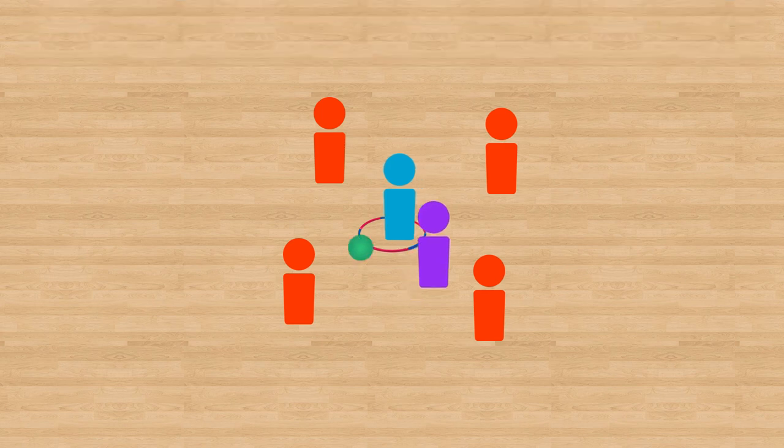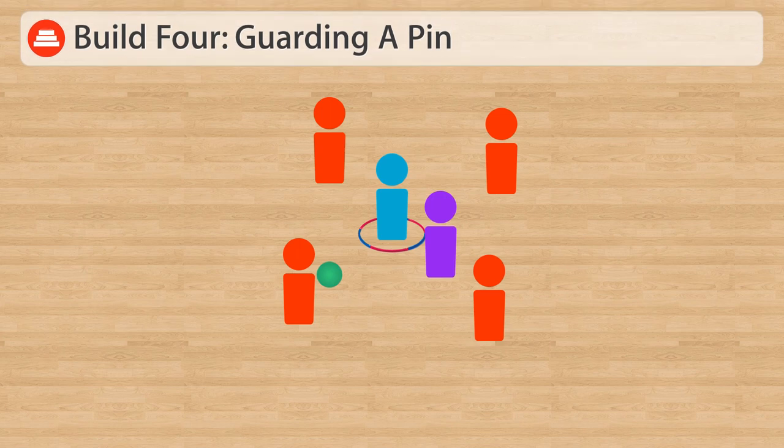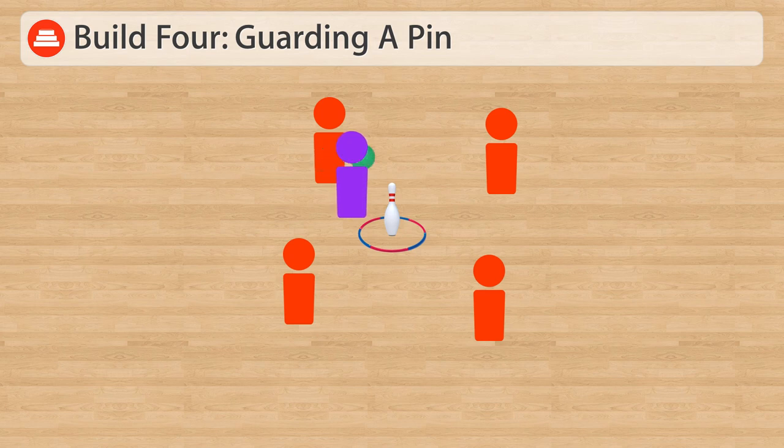In Build 4, we will replace the target player with a pin. The offensive players, the players in the circle, must now pass the ball around, attempting to get a clear shot off on goal. If the pin is knocked over, the players then switch roles.